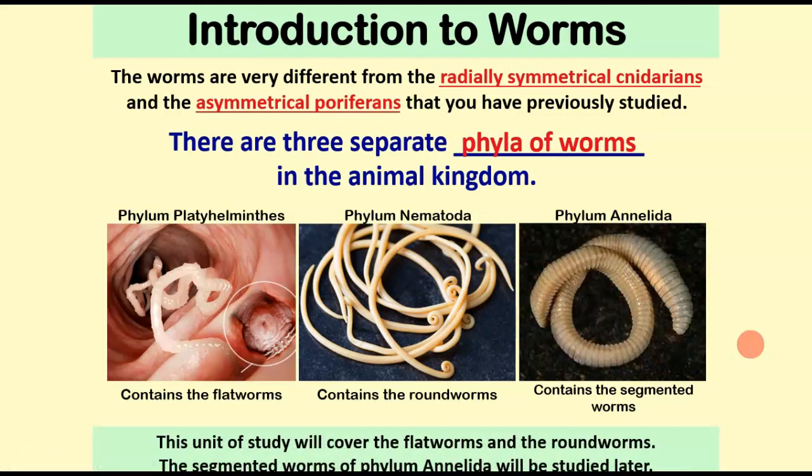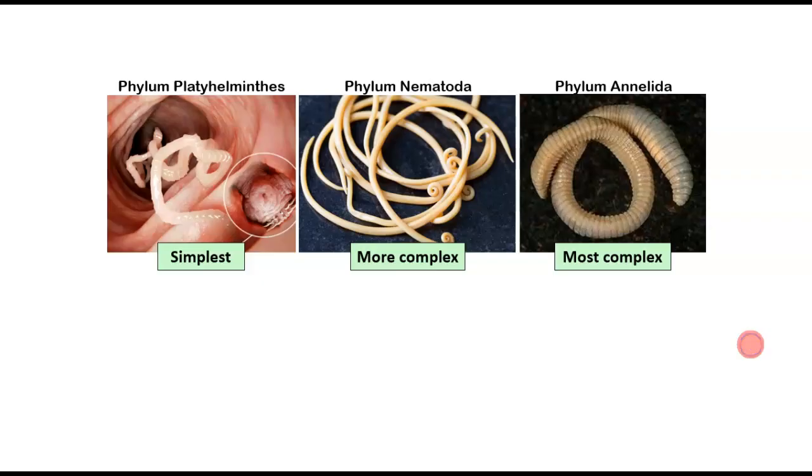So we're going to spend the next few days specifically on flatworms and roundworms. Now, as far as complexity, the phylum Platyhelminthes that we'll start off with is the simplest, and we just got done talking about a coelom. And phylum Platyhelminthes does not have a coelom. They do not have that body cavity.